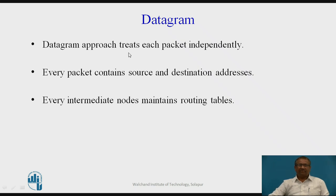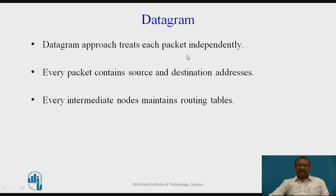In the datagram approach, each packet is treated independently. There is no need for a prior circuit connection, and the connection is not established before data transfer. Every packet contains source and destination addresses, and every intermediate node maintains a routing table so that the packet can be transferred to the appropriate destination.